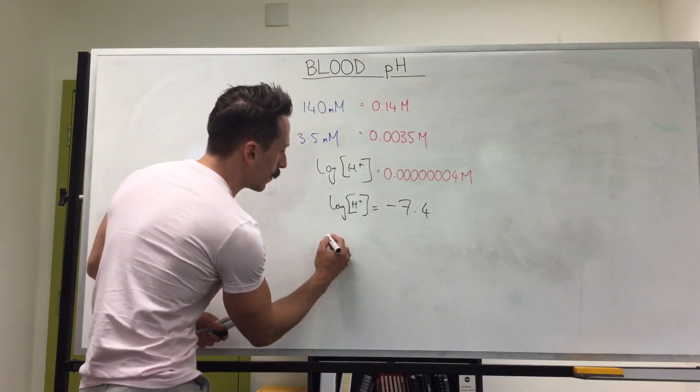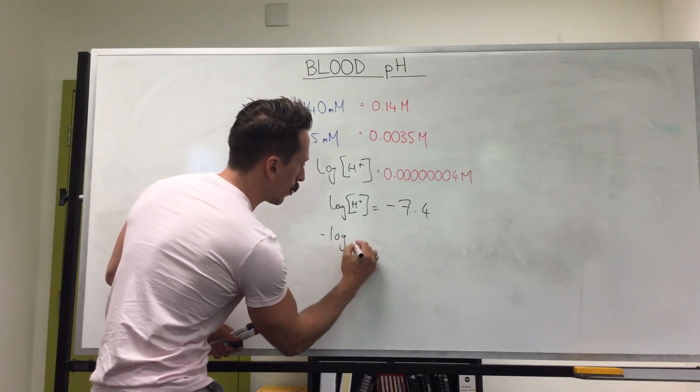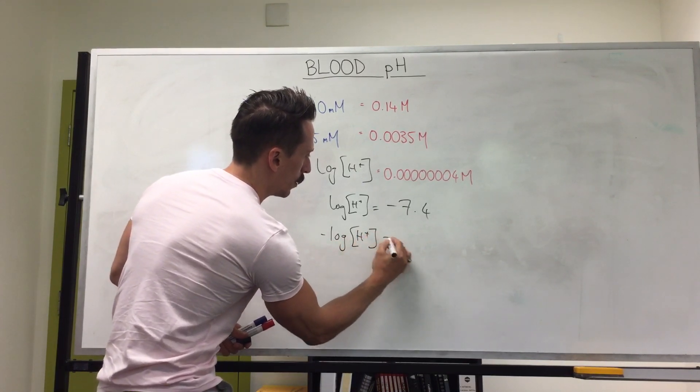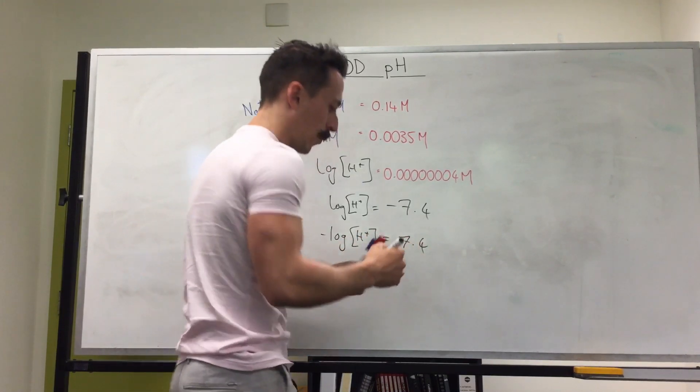Easy. You make it the negative log. So if you write the negative log of hydrogen ion concentration, it ends up being 7.4.